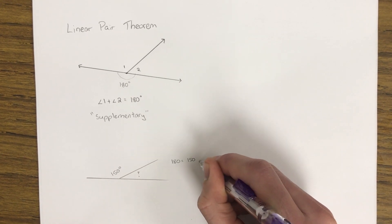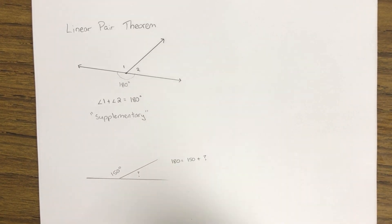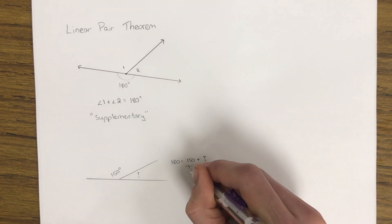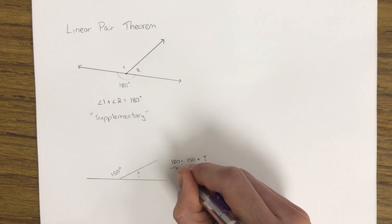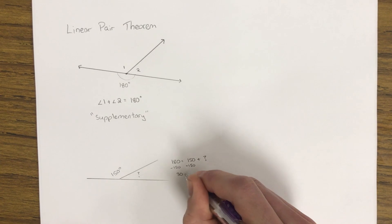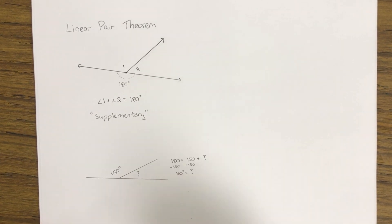So 180 is 150 plus the missing angle. And to get the missing angle on its own, we subtract 150 from both sides. So we end up with 30 degrees is equal to our missing angle.